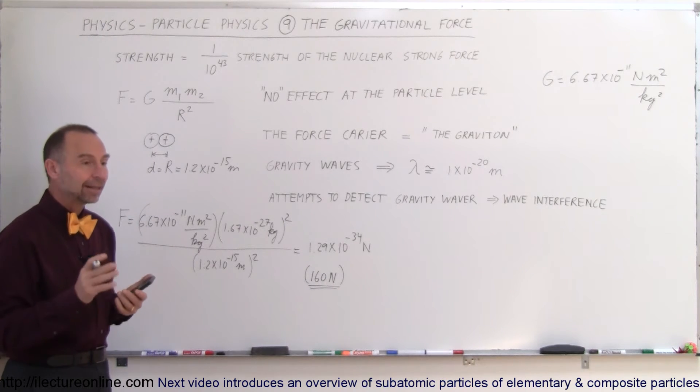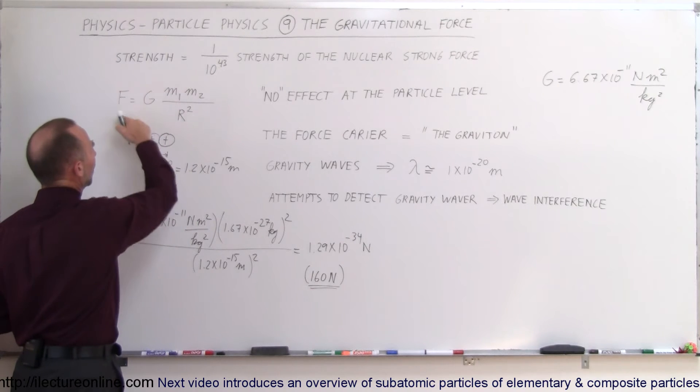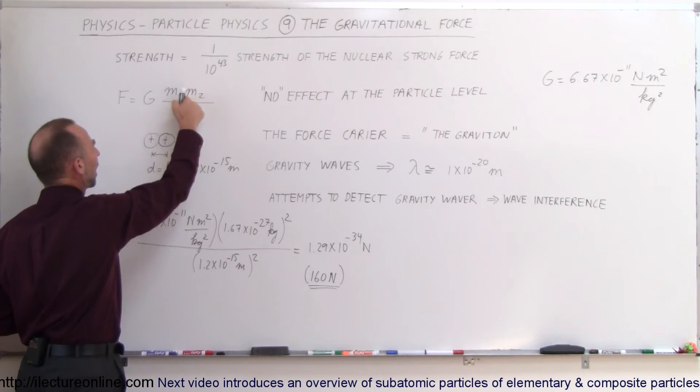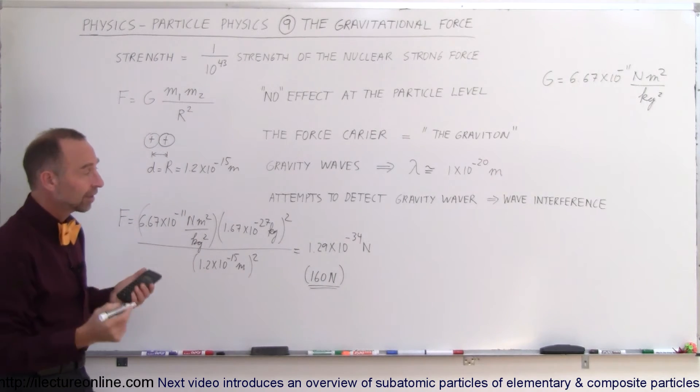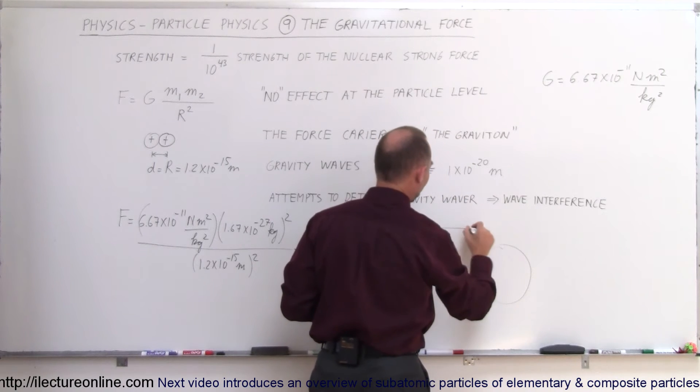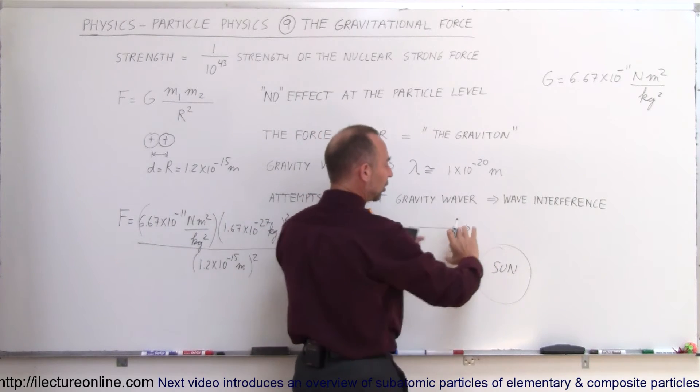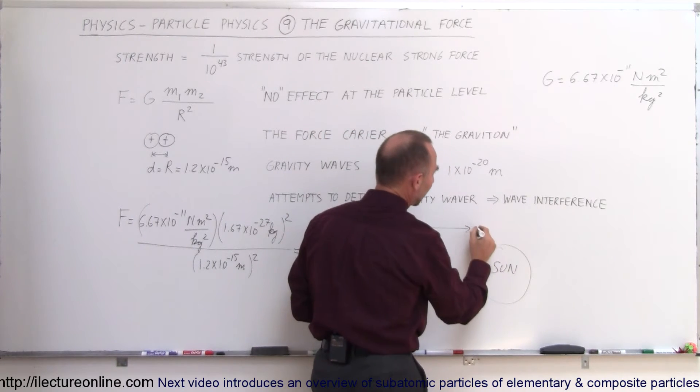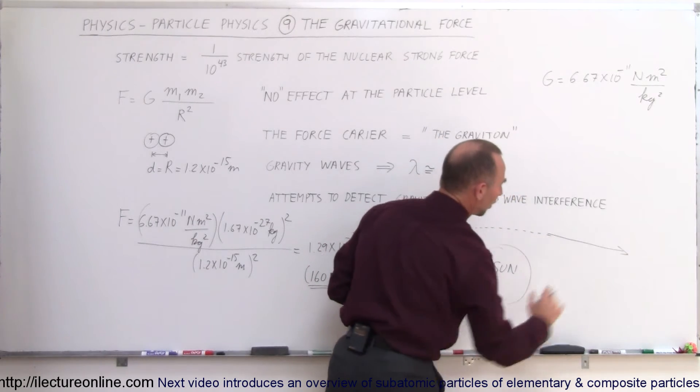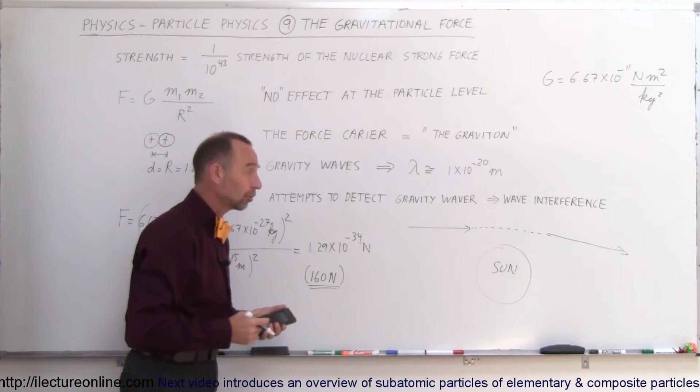Matter of fact, Einstein discovered that the force of gravity actually changes the shape of space itself. Einstein discovered that gravity even affects light. That was a big mystery at first because notice that this equation, the force of gravity as derived by Newton, required that each object had to have mass. Einstein declared that if a beam of light passes by the sun, the gravitational force caused by the sun causes space to bend around the sun and causes the direction of the sunlight to change.